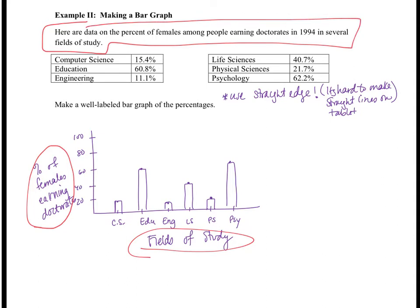I have 6 different categories, therefore 6 different bars, and that's all we need to make this bar graph. Again, notice the bars are not touching because the data is categorical and not numerical.